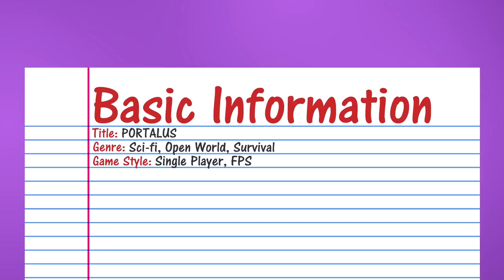On the next line after Game Style, we're going to put 'Platform.' I'm a PC gamer — it's my preferred gaming platform. So basically, this game is only going to be developed for PC. I do apologize to all the console people out there. On the next line, which is going to be the last subsection for the basic information page, is going to be a description of your game.